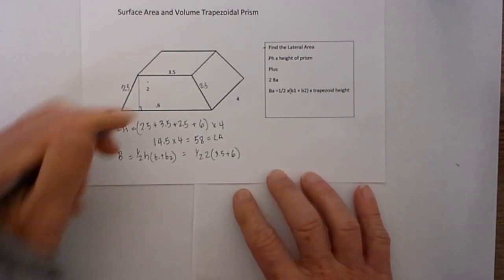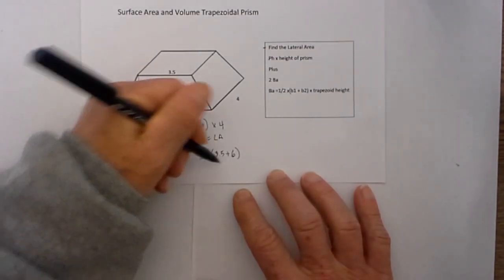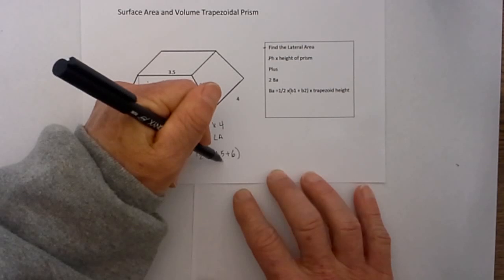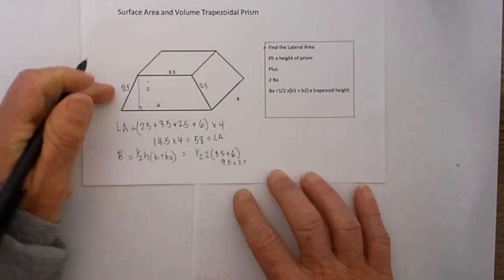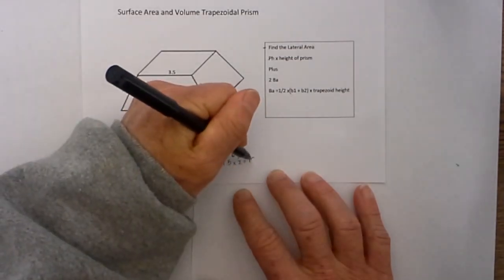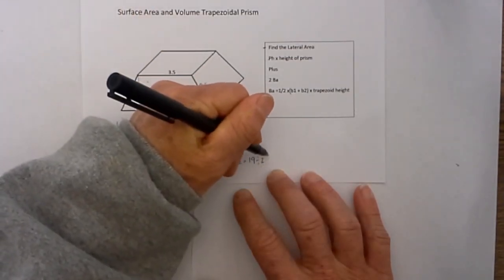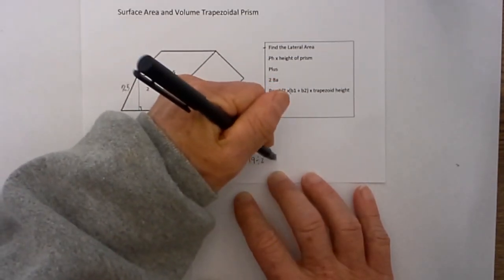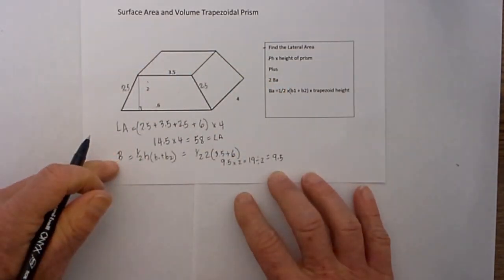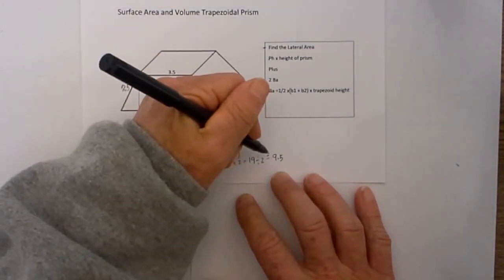And then when I multiply 2 times 6 plus 3.5 is 9.5 times 2 is equal to 19 divided by 2 equals 9.5 but then I need to multiply those. I need to add 2 of these because we have 2 bases.